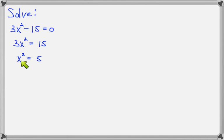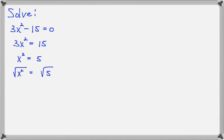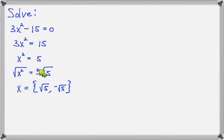Do you recognize this as being in the u squared equals d form? It is — I have just one squared thing on the left and just one number on the right. So if I do the square root of both sides and put in my plus/minus symbol, I can simplify the left side as x, because the square root of x squared is just x. This gives two answers: positive square root of 5 and negative square root of 5.